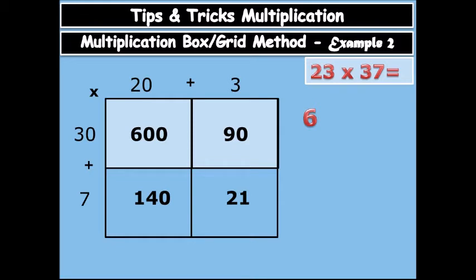So you add up the rows. You have 600 plus 90, then you have 600 plus 140 plus 90 plus 21. You add up all of them within the boxes.